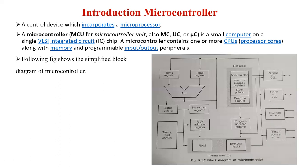There are a few more advantages of built-in peripherals. Built-in peripherals have smaller access times, so their speed is more. Next, hardware is reduced due to the single-chip microcomputer system. Less hardware reduces PCB size and increases the reliability of the system. This is about the basics of microprocessor and microcontroller with their block diagrams.